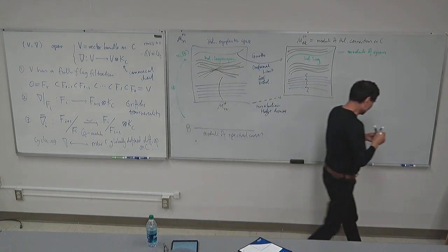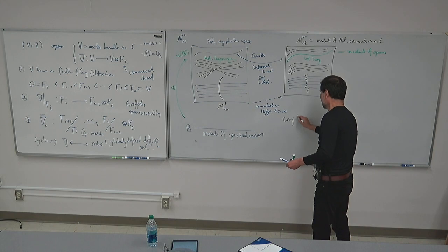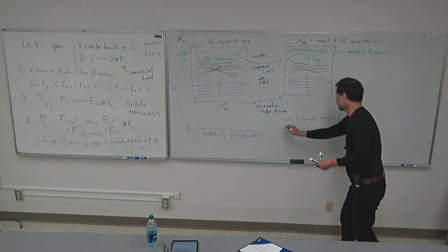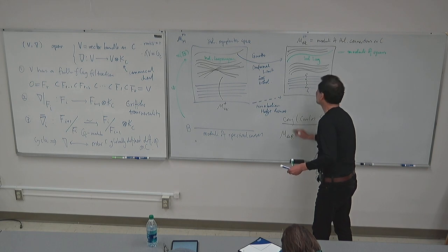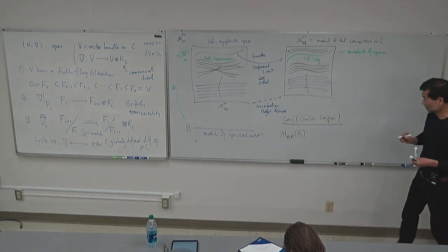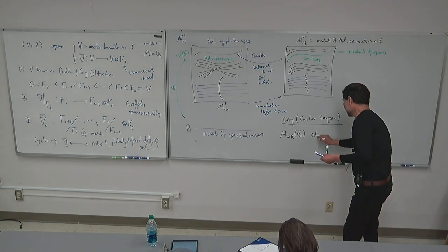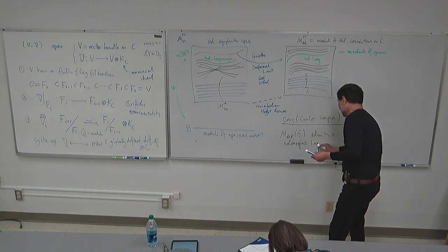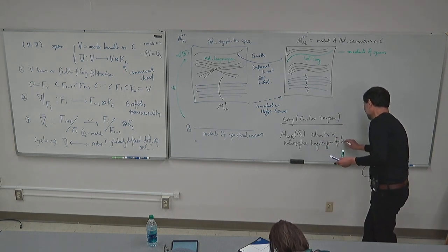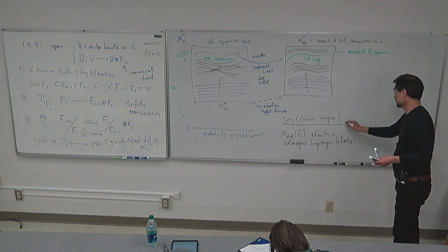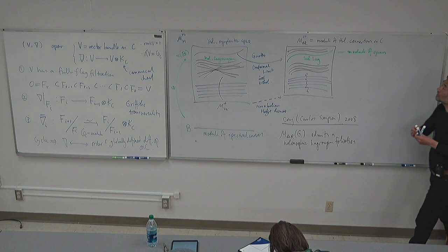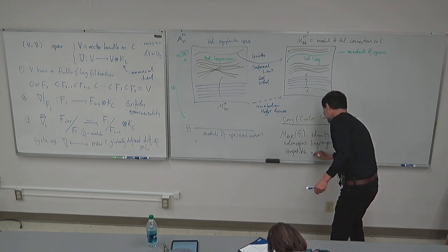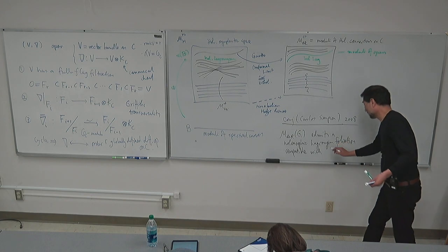The reason we got interested in this is that there is a conjecture by Carlos Simpson. This states that M_dR — defined over the complex reductive group G — admits a holomorphic Lagrangian foliation. This is from 2008.